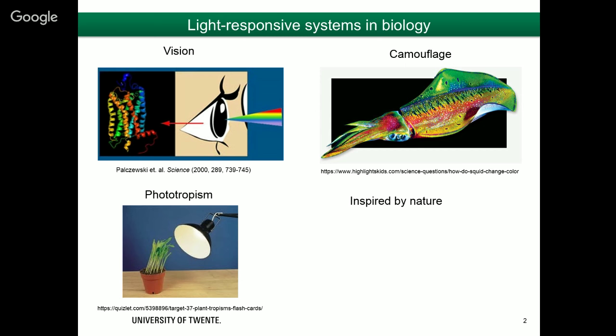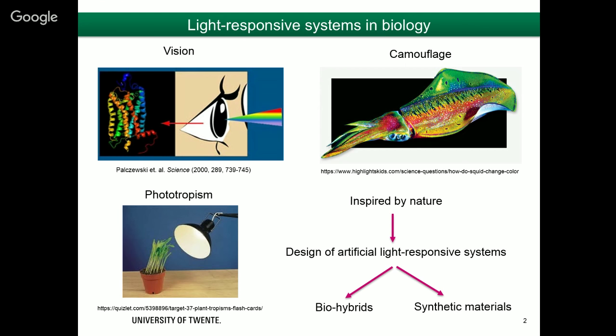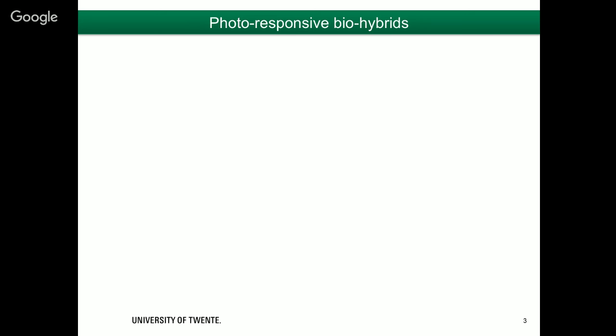Inspired by nature, researchers around the world have attempted to design artificial light-responsive systems. In this talk, we define the systems into two categories: first, biohybrids; and second, synthetic materials. We define biohybrids as biological systems further modified — chemically, in this presentation — into artificial ecosystems. We would like to control biological activities using light, and we can achieve this by controlling the key players in biological systems, which are proteins.